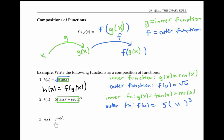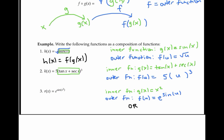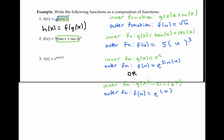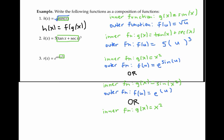There are several ways to write the next example as a composition of functions. For example, we could take x squared as our inner function, and then our outer function takes e to the sine of that inner function. Alternatively, we could take the inner function to be sine of x squared, and then the outer function has to be e to the power. It's also possible to write our function r of x as a composition of three functions: an inner function of x squared, a middle function of sine, and an outermost function of e to the power, which I'll write as h of v equals e to the v.